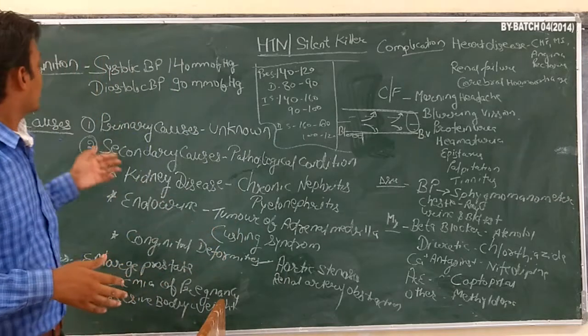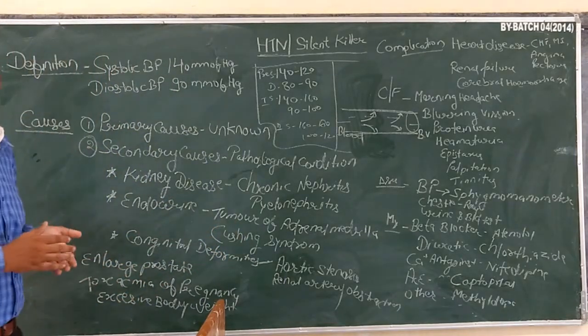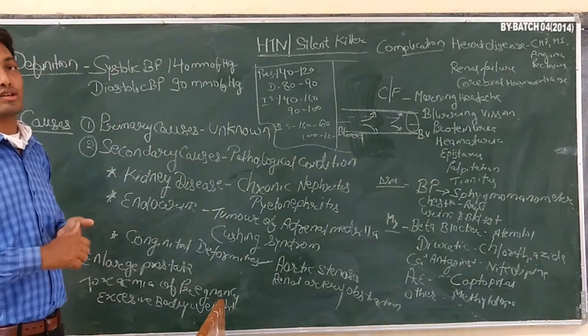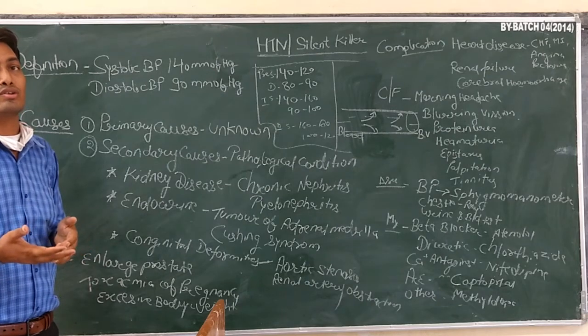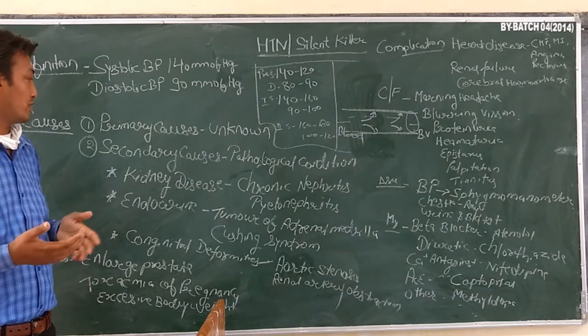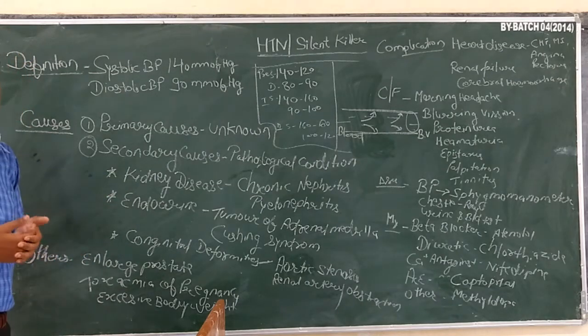Blood pressure has a primary cause. It also has a secondary cause. The secondary cause is a pathogenic condition.